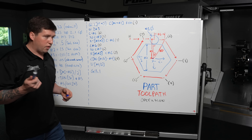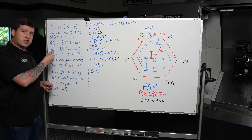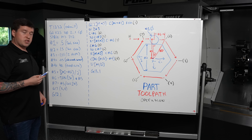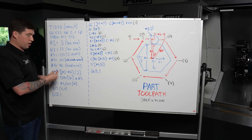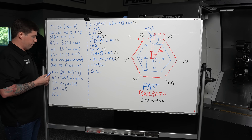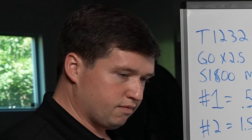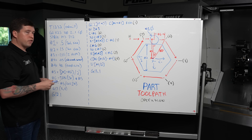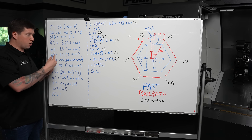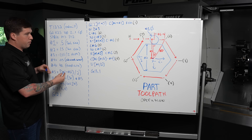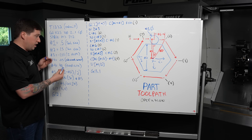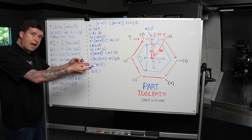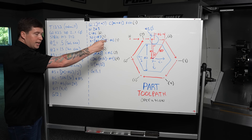You're going to notice I'm multiplying some numbers by two and dividing some numbers by two — this is to accommodate the radial and diametrical values that you're going to input into your machine. So let's go through step by step what I did.